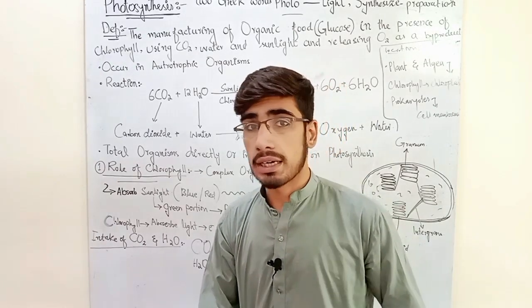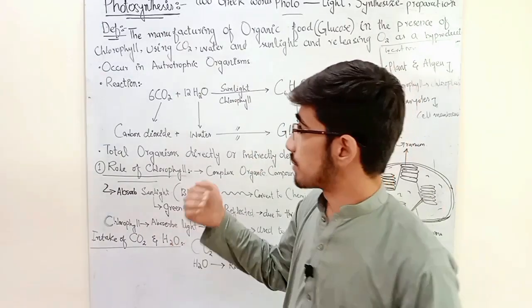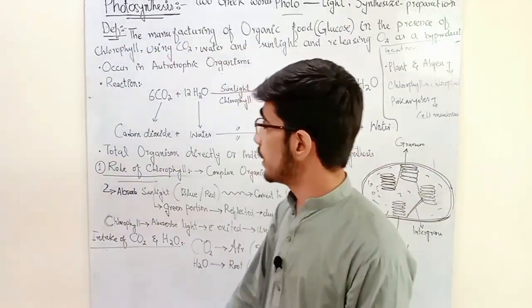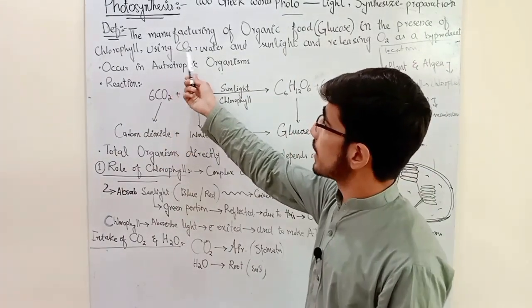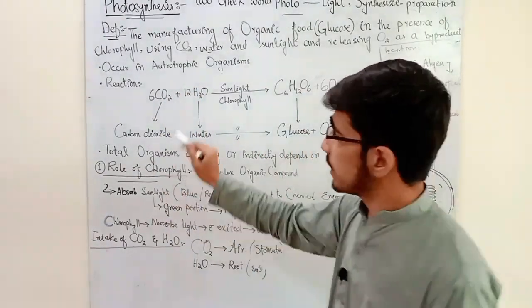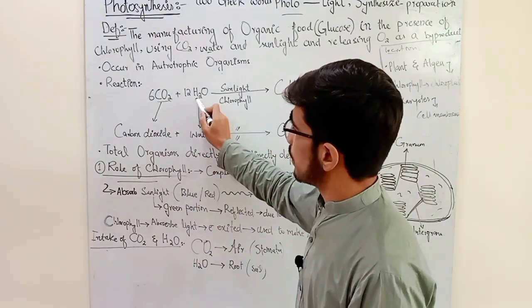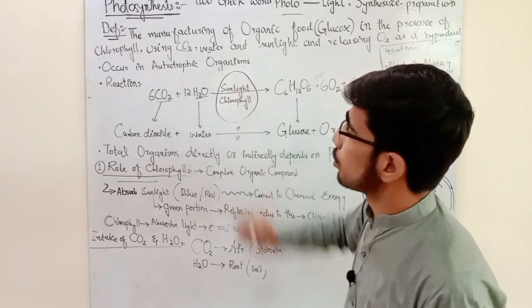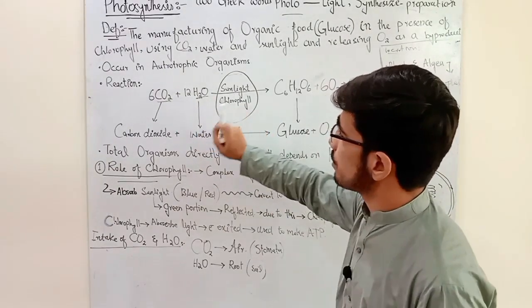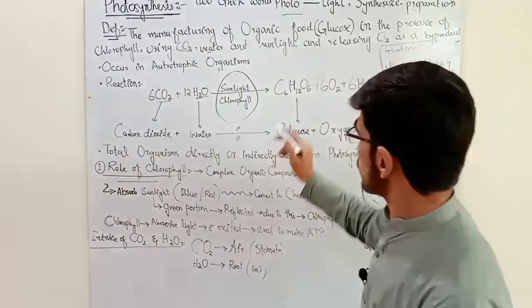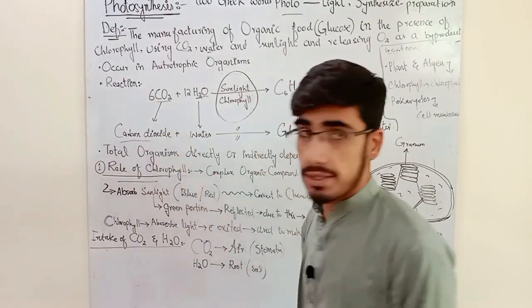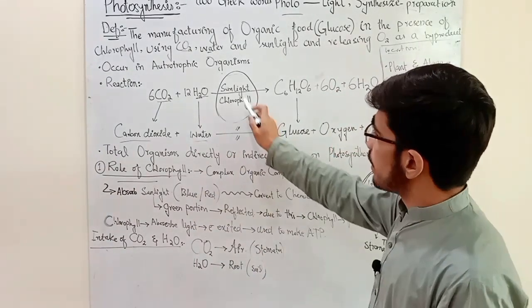For the autotroph, the reaction involves carbon dioxide and water. In the presence of sunlight and chlorophyll, carbon dioxide and water react. This gives us C6H12O6, which is the molecular formula for glucose.